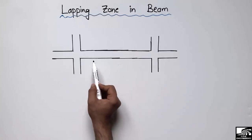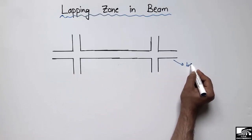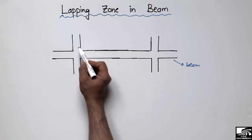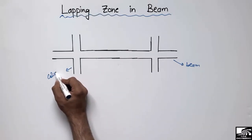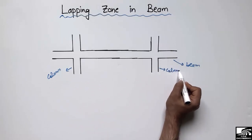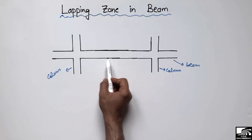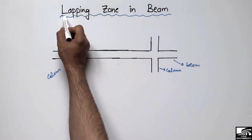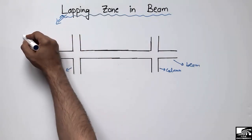This is a beam — a horizontal member. It is supported by two vertical supports, which are called columns. These vertical members are known as columns, and I have to show you where we can overlap our steel bars in the beam.